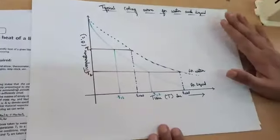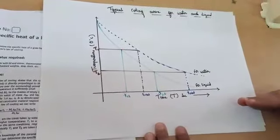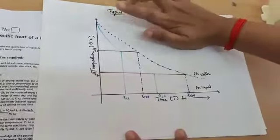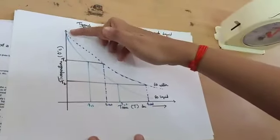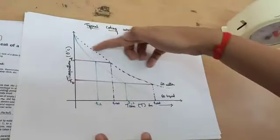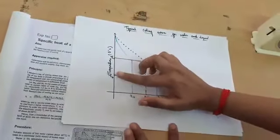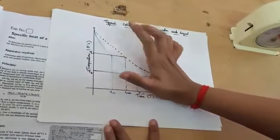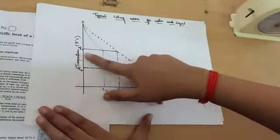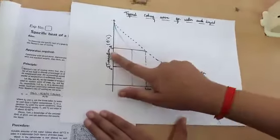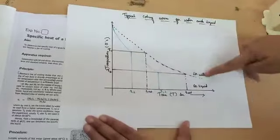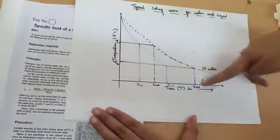After all this, we have to plot a graph. On the x-axis we take time, and on the y-axis we take temperature (theta). We draw a curve — when we plot the points, we get one curve for water and one curve for liquid. For two temperatures theta 1 and theta 2, with a difference of around 10 degrees Celsius, when we draw horizontal lines at theta 1 and theta 2, they touch both the liquid curve and the water curve. The water curve shows a slower rate of cooling, meaning any liquid cools faster than water.